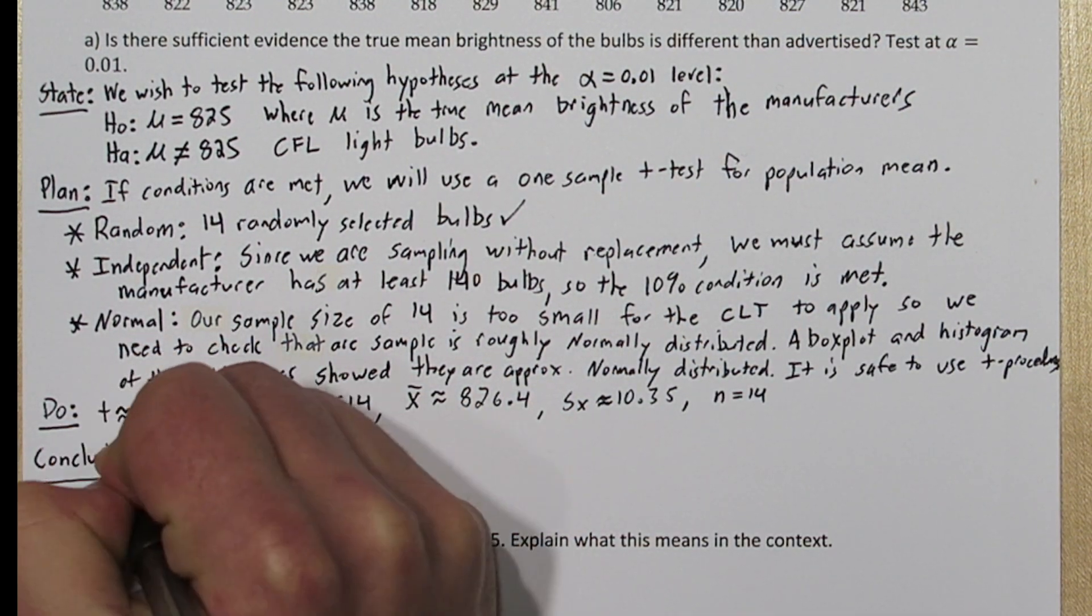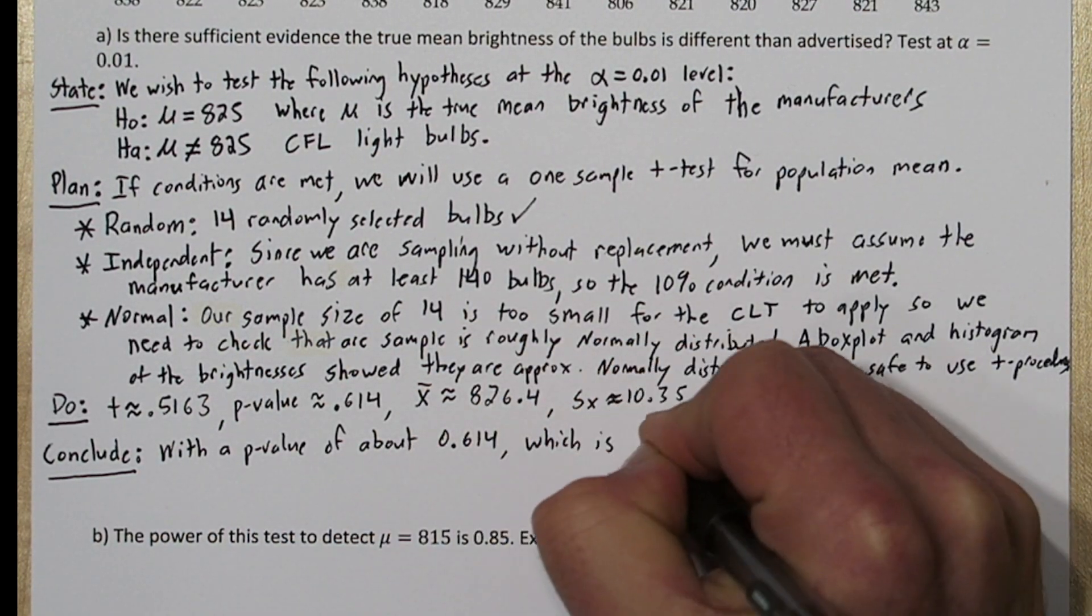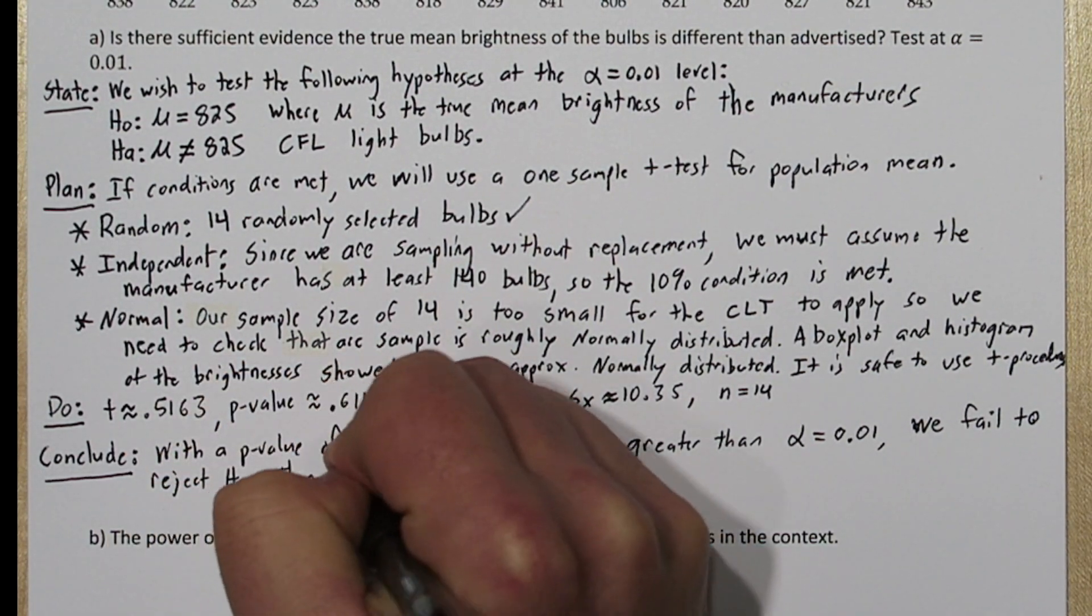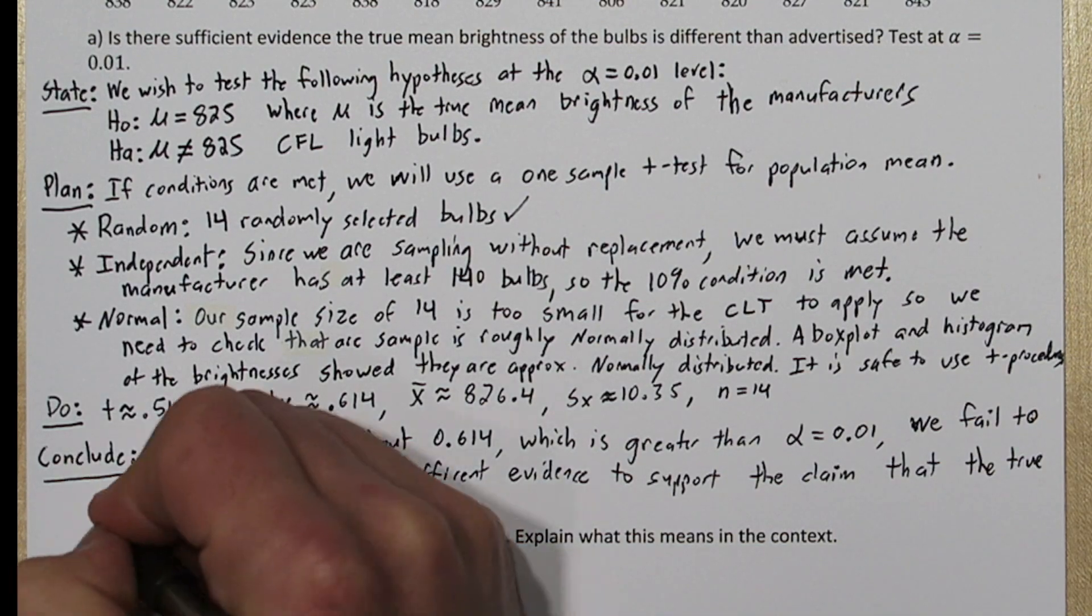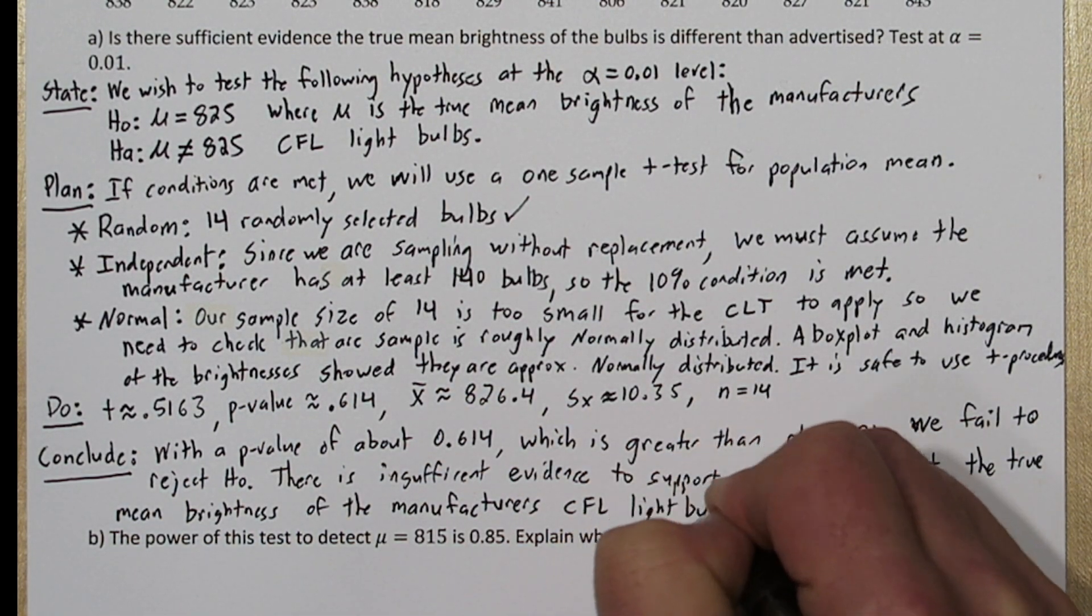Now we're ready to conclude. With the p-value of about 0.614, which is greater than alpha equals 0.01, we fail to reject the null hypothesis. There is insufficient evidence to support the claim that the mean brightness of the manufacturer's CFL light bulbs is not 825.